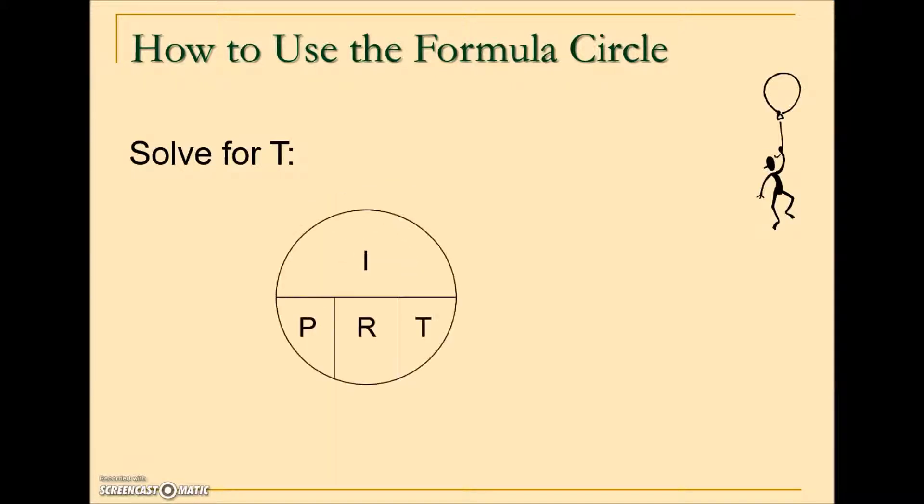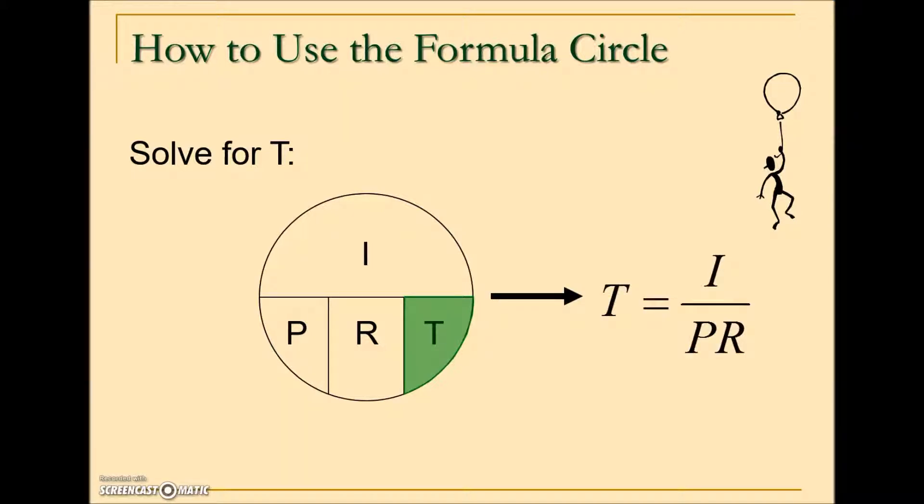The third possibility is to solve for time. When we cover up or blank out time, that leaves I over P times R, and this gives us the relationship or equation that we'll use to solve for time when calculating simple interest.